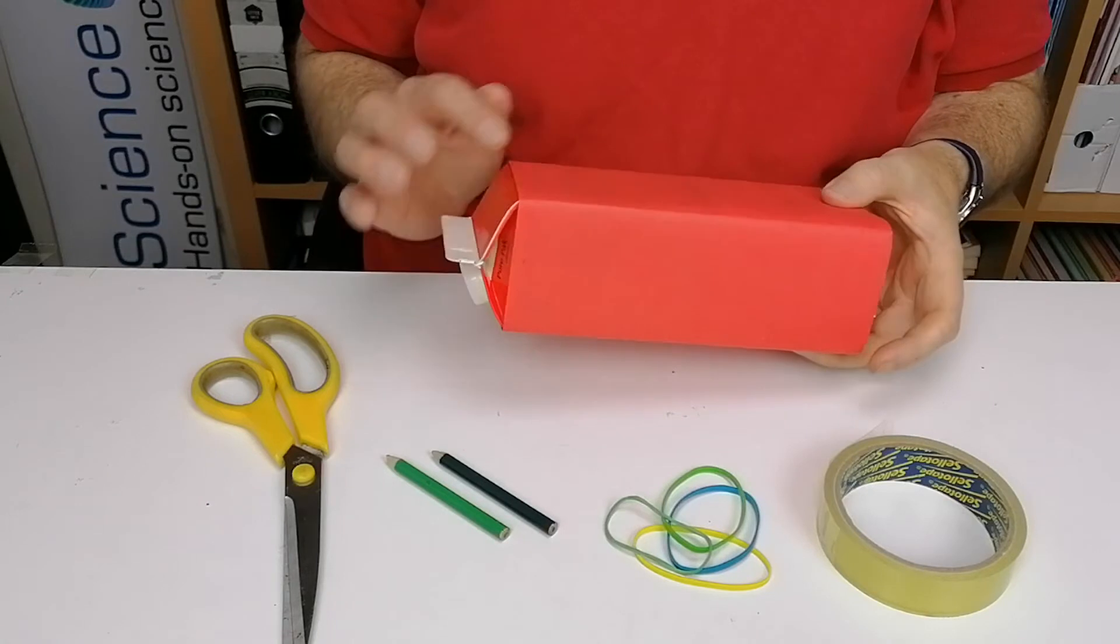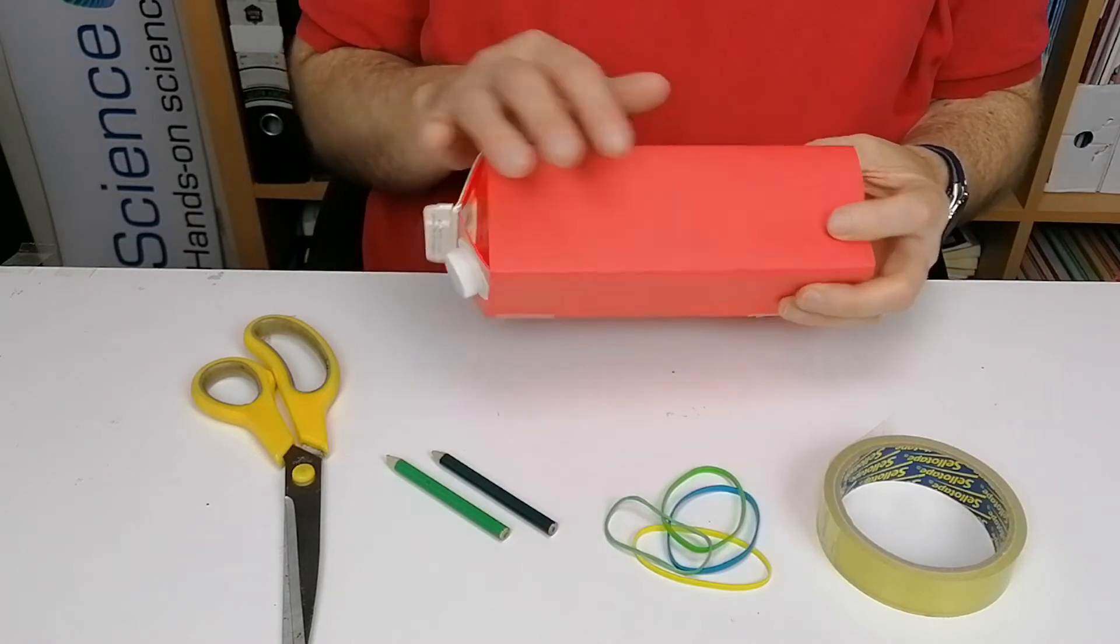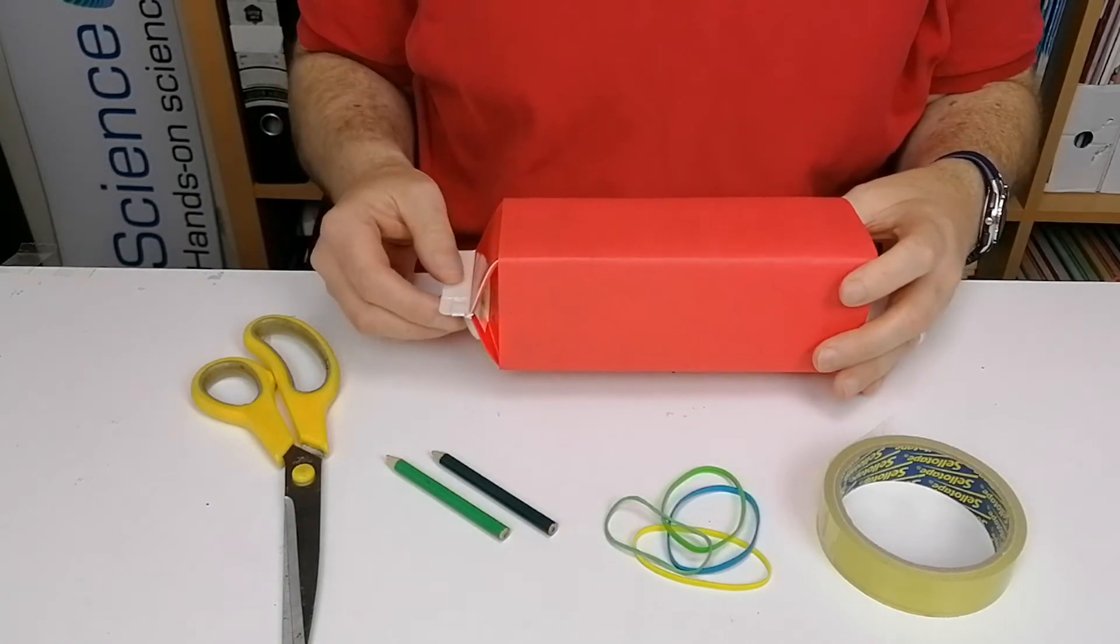I've just covered the juice carton in some paper. You can color it in, make it decorative. I just wanted to cover up what was underneath.